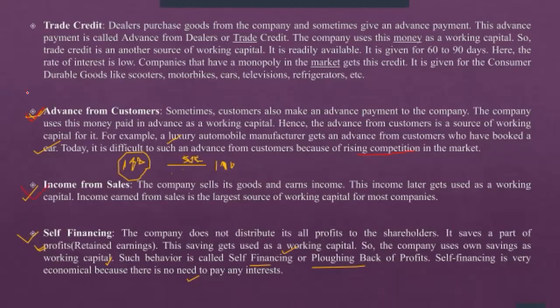Income from sale is another source. The company sells its goods and earns revenue. For example, if you have finished goods worth one lakh rupees, you sell them, get the money, reinvest, and produce again. This cycle of using revenue from sales as working capital — for manufacturing, trading, or any business activity — is what we call income from sales used as working capital.